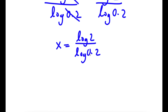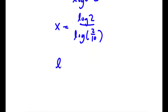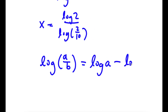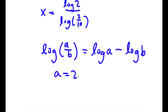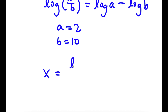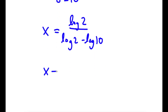Now, log 0.2 is the same thing as log of 2 over 10. Using the quotient rule, where a is 2 and b is 10, I can rewrite this as x is equal to log 2 over log 2 minus log 10. Now, log 10 is simply 1, so I have x is equal to log 2 over log 2 minus 1.